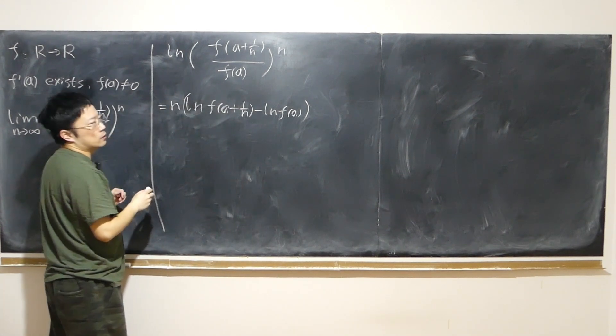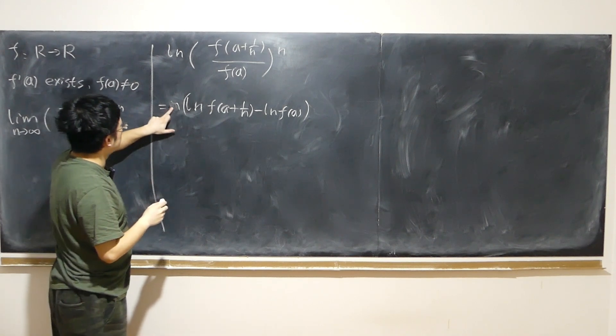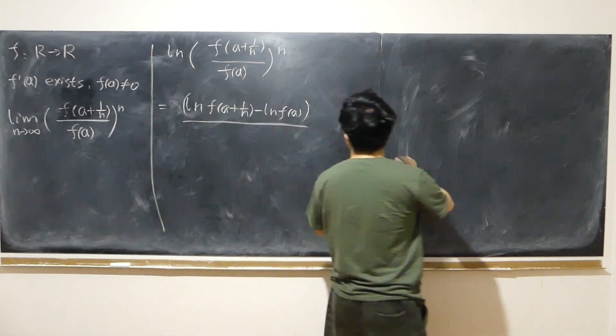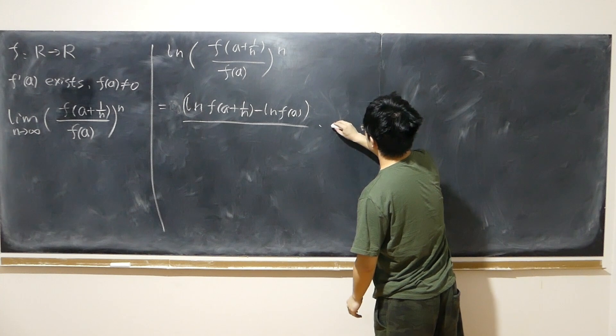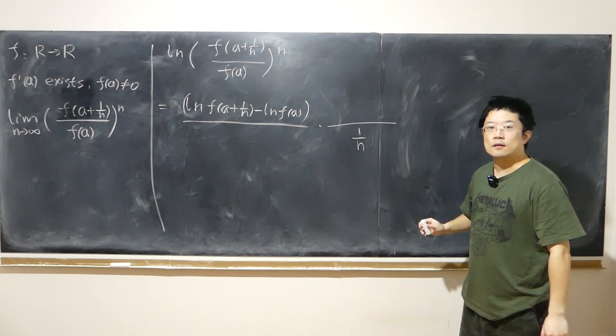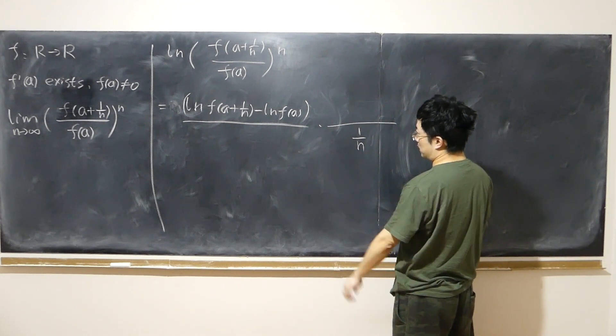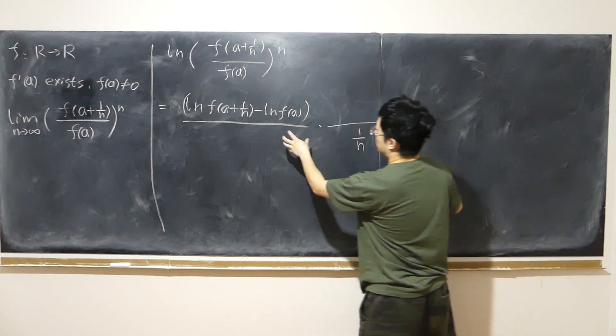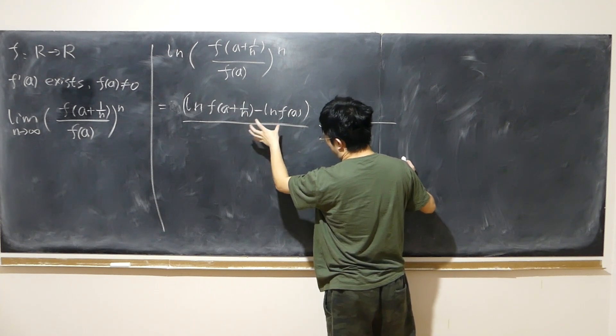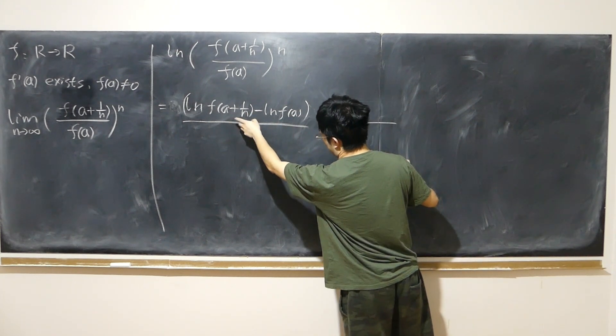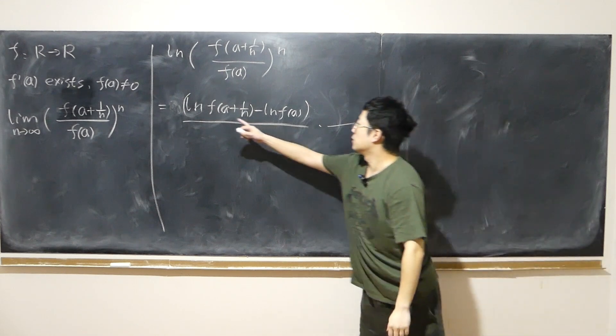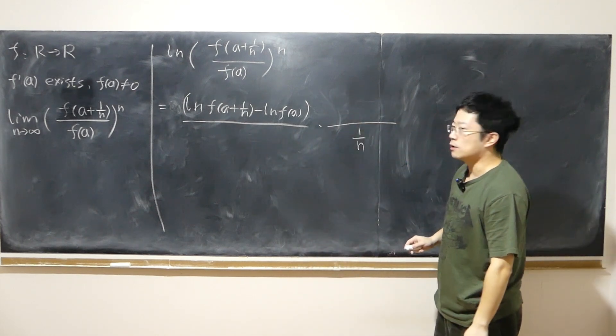But then we can somehow put the n onto the bottom. Multiply by n is the same as if divided by 1/n. I'm going to put 1/n down here. So that's very close to the form of a derivative, right? 1/n approaches 0, a+1/n approaches a. But the trouble is that we don't exactly have f(a+1/n) - we only wish we didn't have log, didn't have this log and that log. But somehow we can make it up.